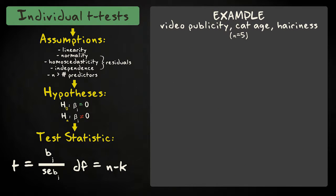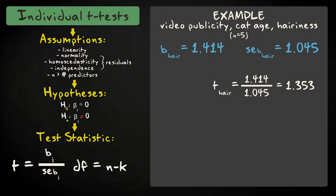We can perform the same procedure for hairiness. Suppose the regression coefficient equals 1.414, and the standard error is 1.045. Then the t-value equals 1.353, with again, 5 minus 3 equals 2 degrees of freedom.